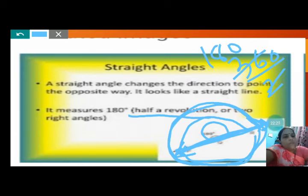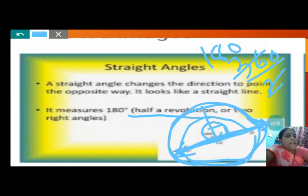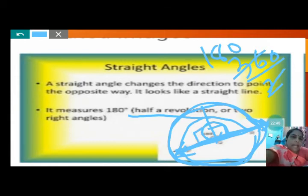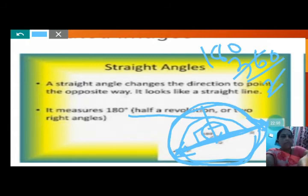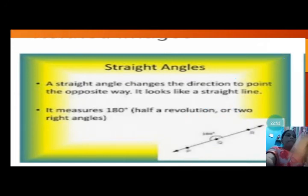So a straight angle has two right angles in it, and it is half of one revolution which is 360 degrees.